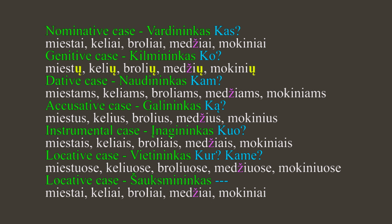Kilmininkas — genitive case (ko): miestų, kelių, brolių, medžių, mokinių. The genitive plural ends in a nasal 'u', so you can recognize that it's plural genitive case when you see that 'u nasal' ending. Naudininkas — dative case (kam, for what/for whom): miestams, keliams, broliams, medžiams, mokiniams. Easy!